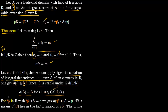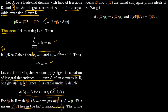Since B is stable under the Galois group, take a prime ideal P in B whose contraction to A is p. Applying σ to the relationship P ∩ A = p gives σ(P) ∩ A = p as well. So if P lies in the factorization of p, then σ(P) also lies in the factorization of p. This is precisely because B is stable under the action of the Galois group, so P is carried over to σ(P).